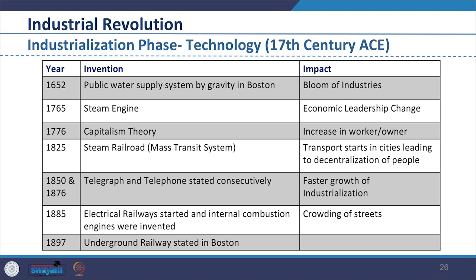In 1885, electrical railways and the internal combustion engine were invented, making transit and trade between states easier while crowding the streets. In 1897, the underground railway was also invented. In this time, rivers played a major role in the transit of finished products from factories to the coast.